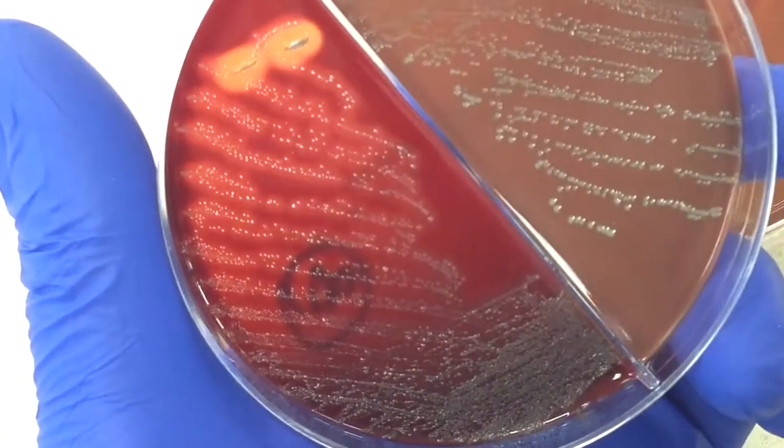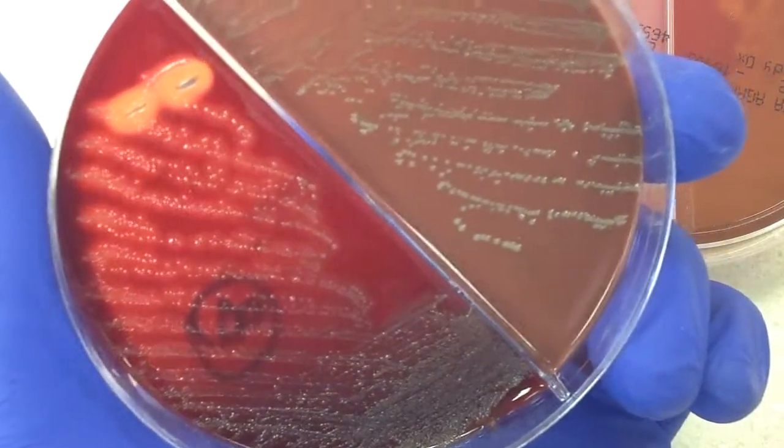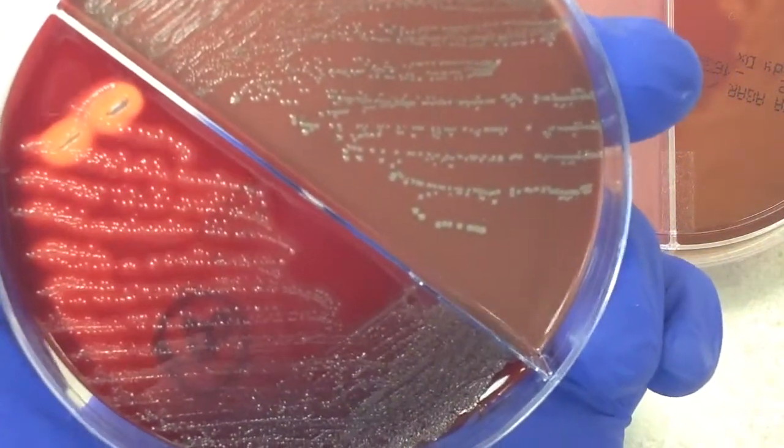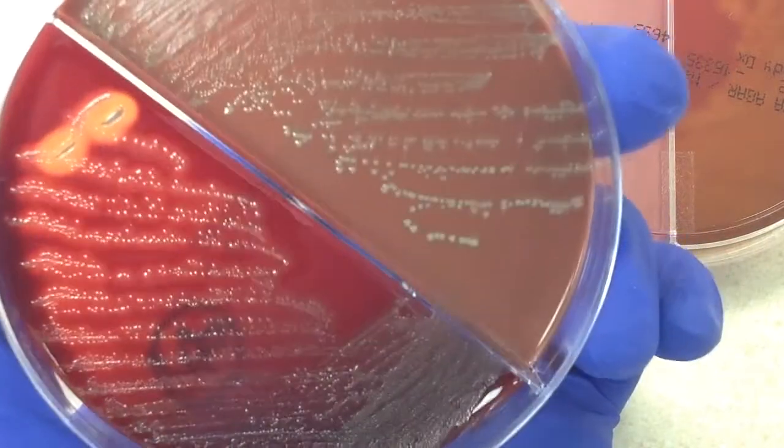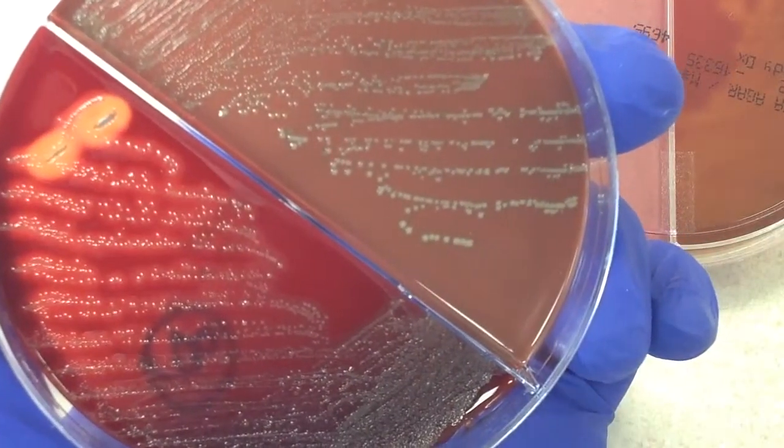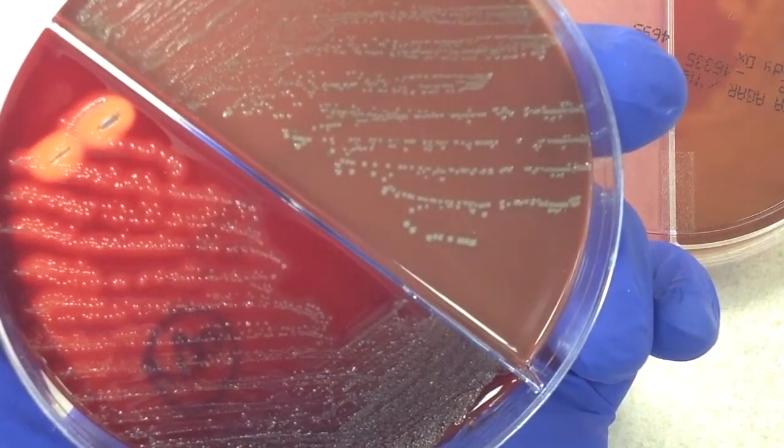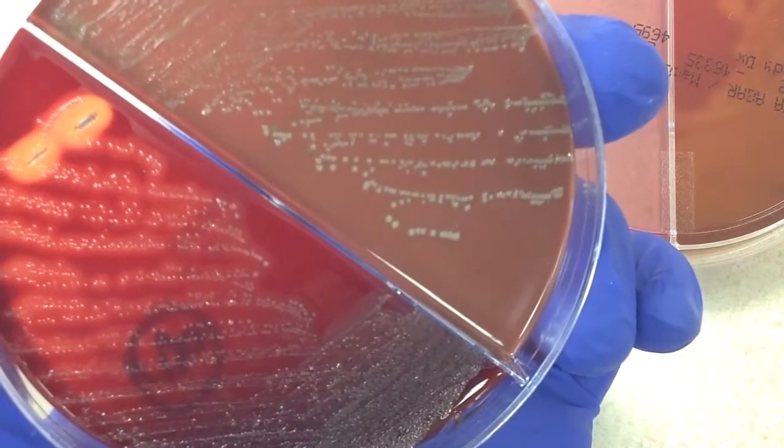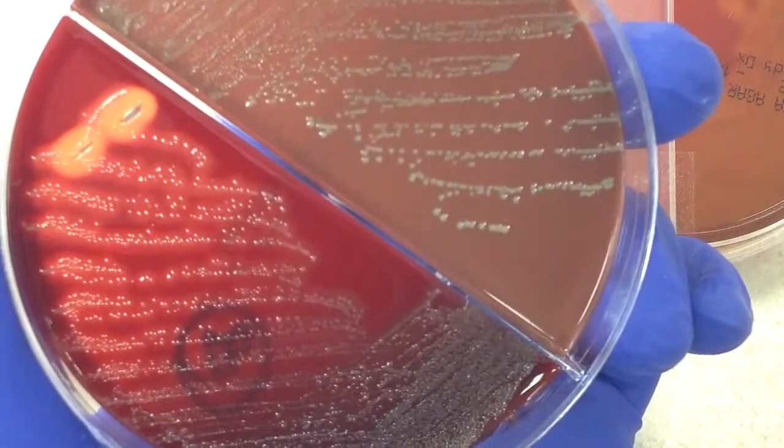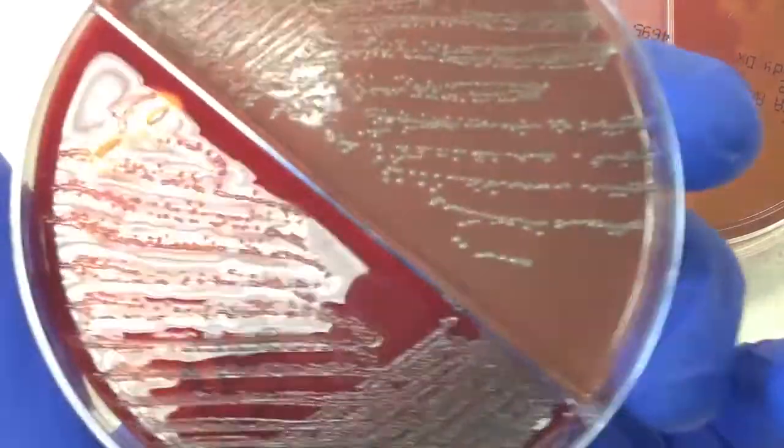So we're going to go ahead and we're going to work up these beta hemolytic colonies. Now we have to send a report out to the doctor, a preliminary report. So when we have cultures that are expected to have normal flora in our report, we're always going to comment on that.